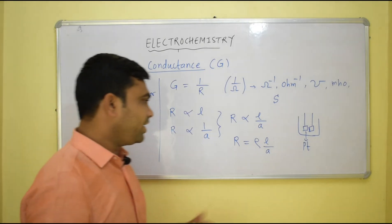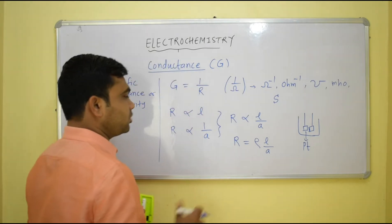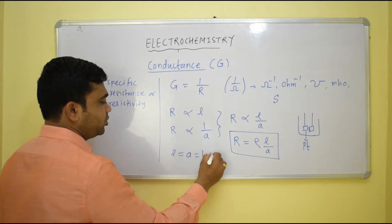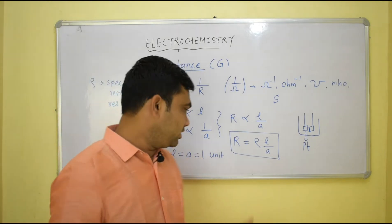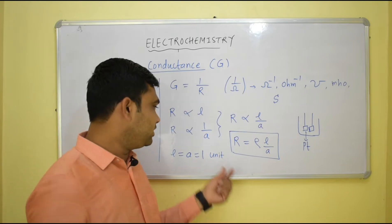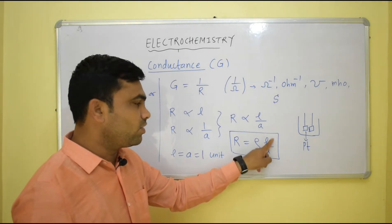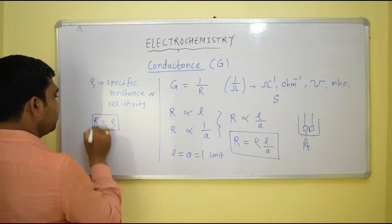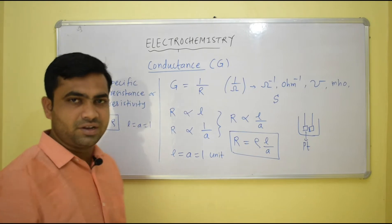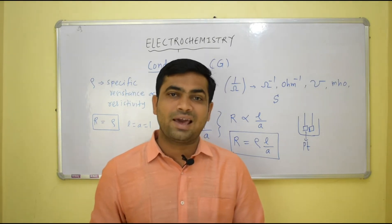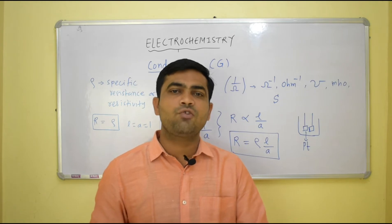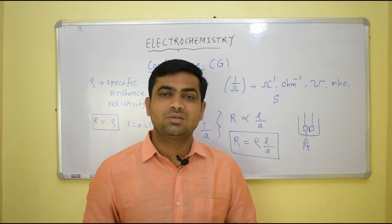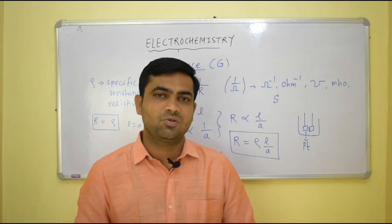Why is it called 'specific'? From the equation R = ρ·l/A, if we set length equal to one unit and area equal to one unit — for example, length of one centimeter and area of one centimeter squared — then R equals ρ. So whenever a conductor has unit length and unit cross-sectional area, the resistance offered is called specific resistance or resistivity. The word 'specific' means the length and area are specified as one unit.